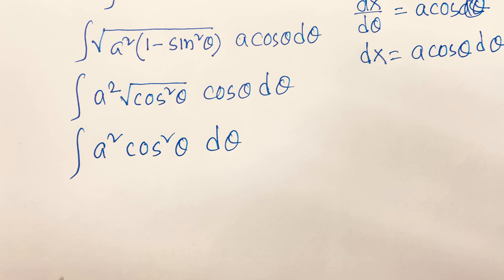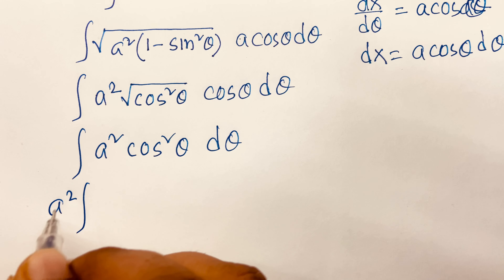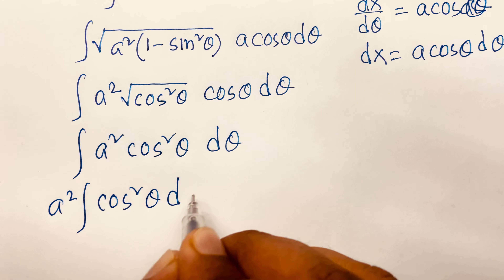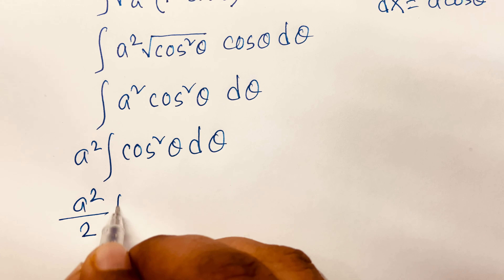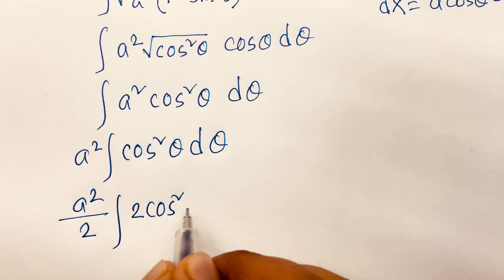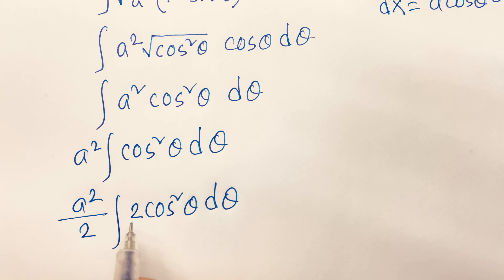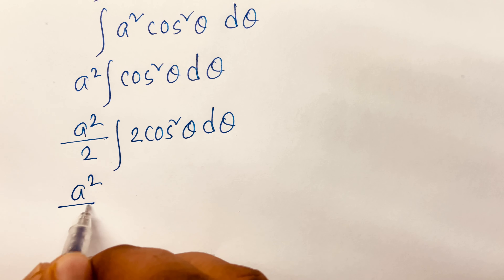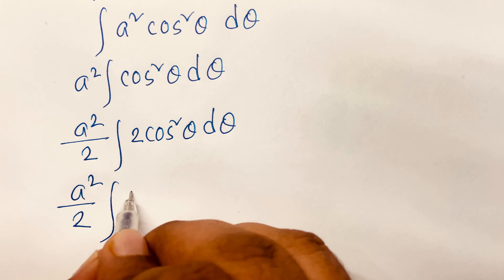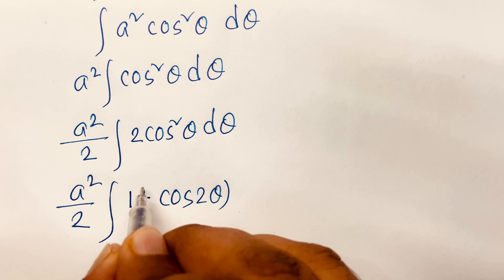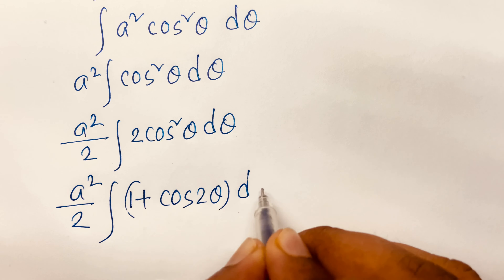The integral becomes ∫√[ a²(1 − sin²θ) ] · a cosθ dθ. Here a² is common under the square root, giving a√(1 − sin²θ). We know √(1 − sin²θ) = cosθ, so the integrand becomes a² cos²θ dθ.